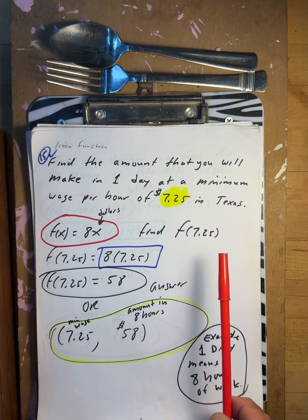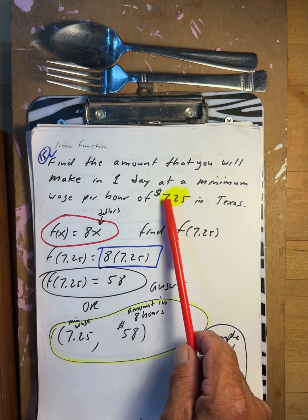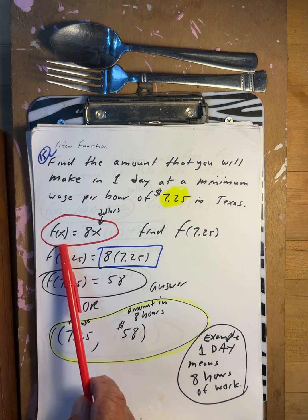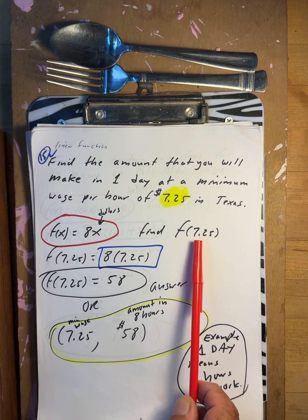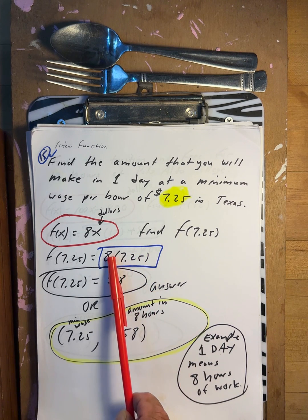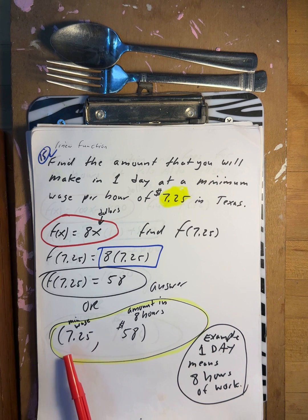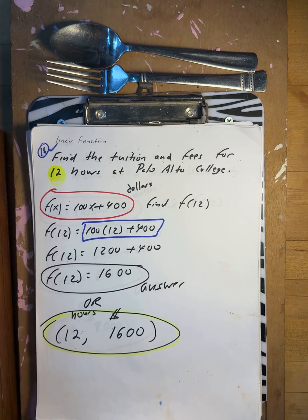Find the amount you will make in one day at minimum wage of $7.25 in Texas. One day equals 8 hours of work. f of x = 8x, so 8 times 7.25 equals $58. At $7.25 per hour, you make $58 in one day.